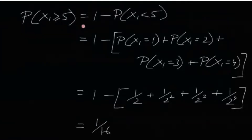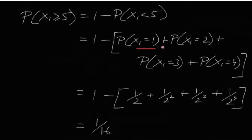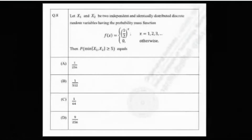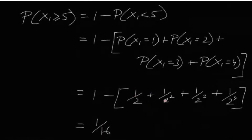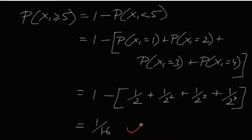P(X1 ≥ 5) can be written as 1 minus P(X1 < 5), which means 1 minus P(X1 = 1, 2, 3, or 4). If X1 is less than 5, the possible values it can take are 1, 2, 3, or 4. Using the PMF, the corresponding probabilities are 1/2, (1/2)², (1/2)³, and (1/2)⁴. Summing these gives us P(X1 ≥ 5) = 1/16.